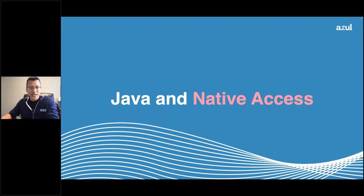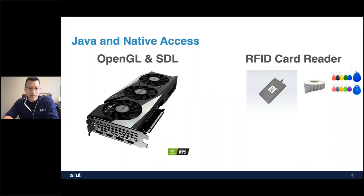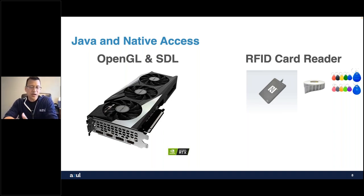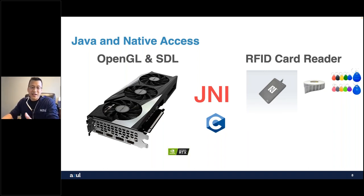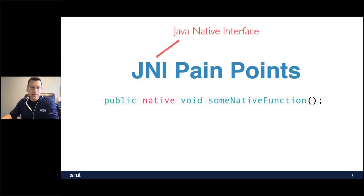So what is the state of Java and native access? As a Java developer, did you ever need access to native code such as OpenGL or SDL libraries — to take advantage of hardware like GPUs for high-performance graphics, or access a device such as an RFID card reader? Well, if you answered yes, then you've probably heard of JNI — Java Native Interface. Those who have used it know that it's really, really tough to work with.